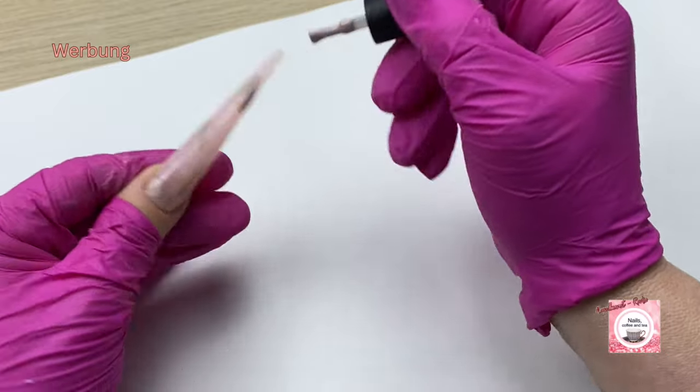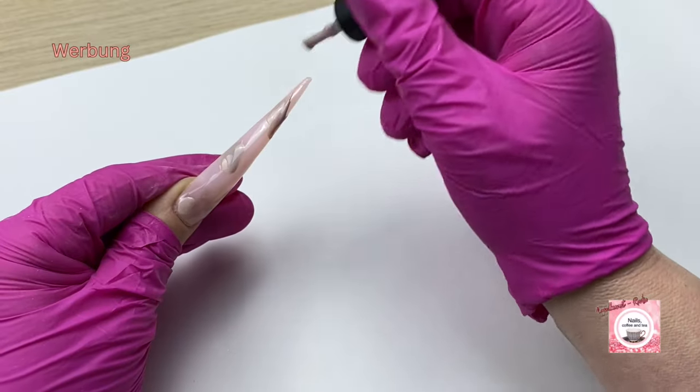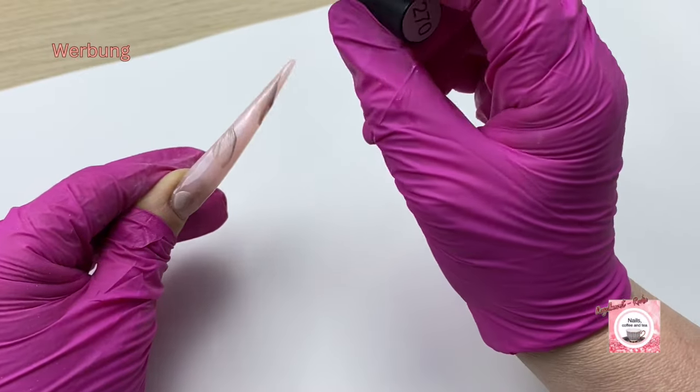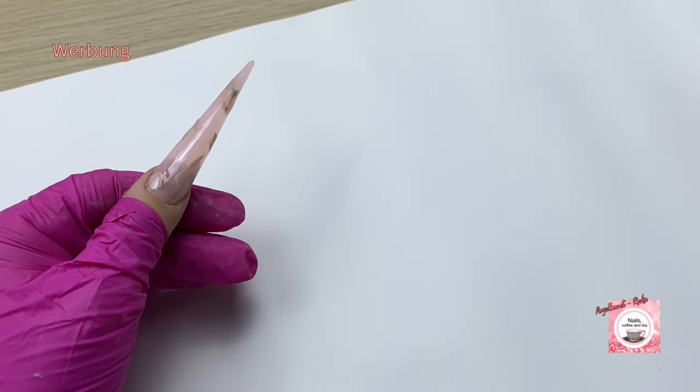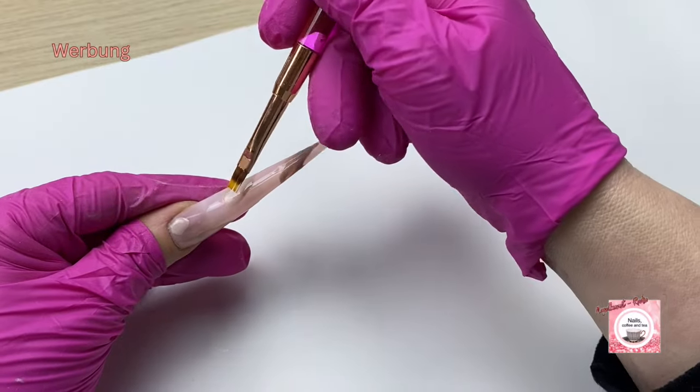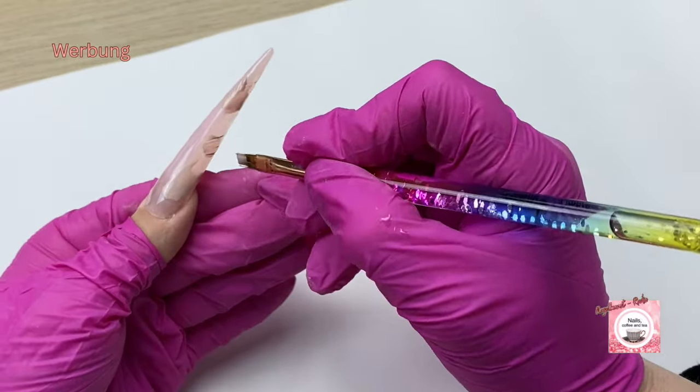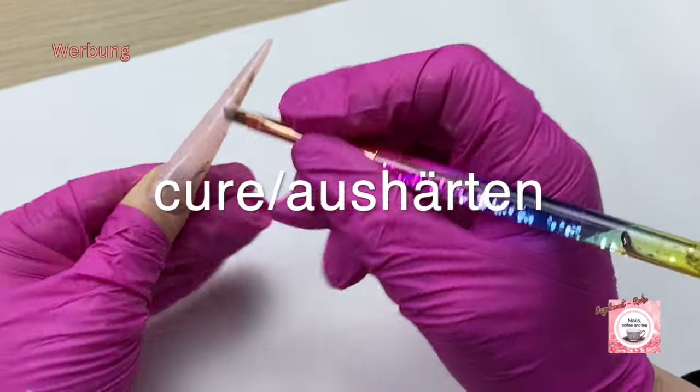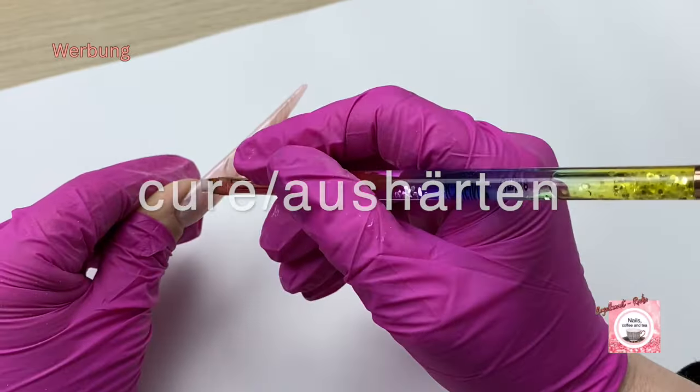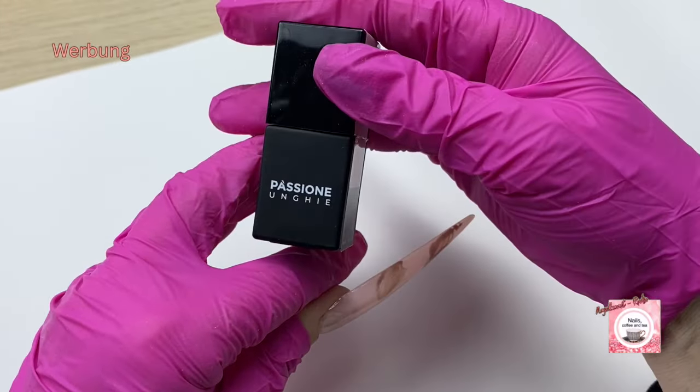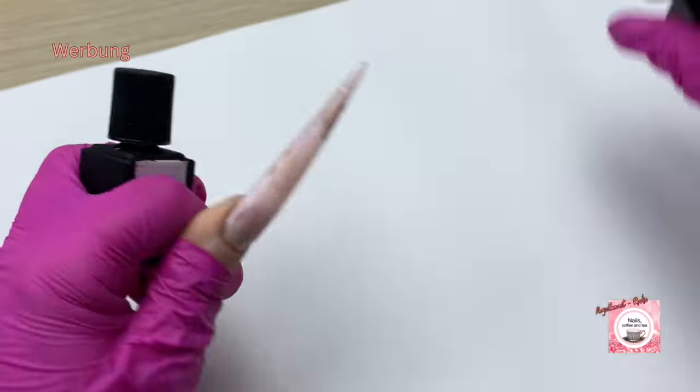Then comes a nude tone here. Unfortunately I can't link this anymore - it's a former Beetle bottle, a nude tone. I'm placing it point by point as stripes on the nail and now pulling through with my ombre brush to create brush strokes, making it look like the color is missing.